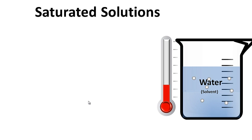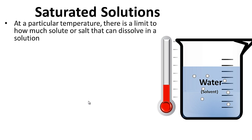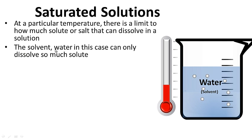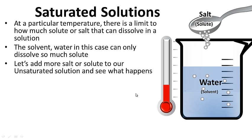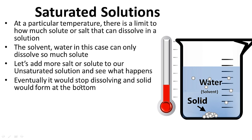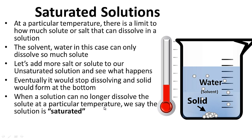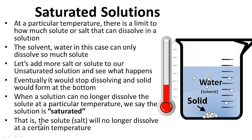Saturated solutions: at a particular temperature, there is a limit to how much solute or salt can dissolve in a solution. The solvent — water in this case — can only dissolve so much solute at a particular temperature. If we add more salt to our unsaturated solution, notice it did not dissolve — it remained a solid at the bottom. When a solution can no longer dissolve the solute at a particular temperature, we say the solution is saturated. No more solute will dissolve, and any solute you add will just form at the bottom.